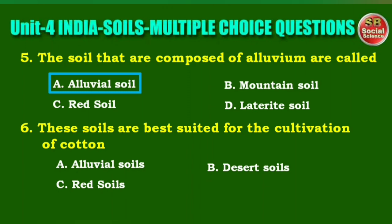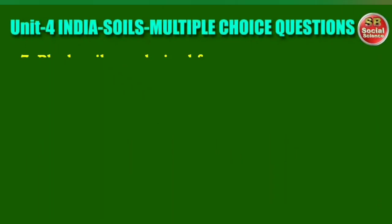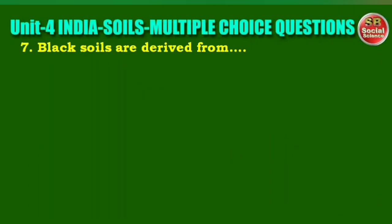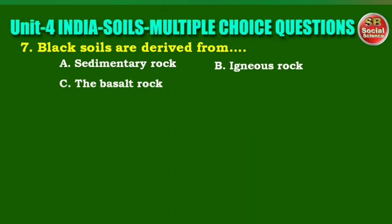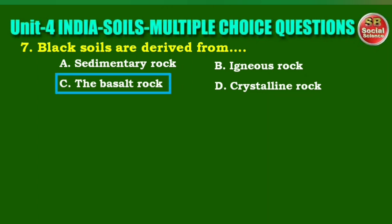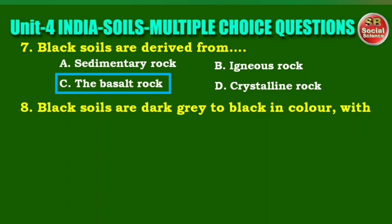Next question: these soils are best suited for the cultivation of cotton. The right answer is option D, black soils. Next question: black soils are derived from. Options are: sedimentary rock, igneous rock, the basalt rock, crystalline rock. The right answer is option C, the basalt rock.